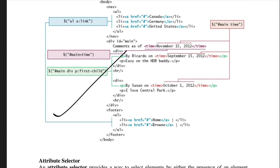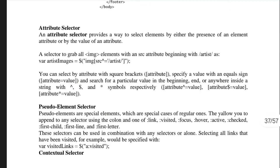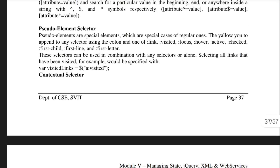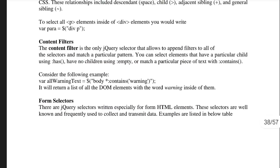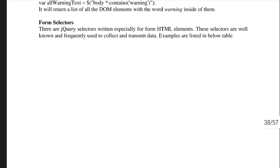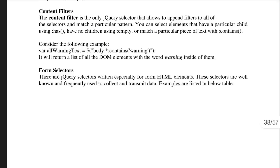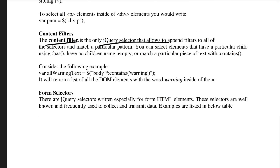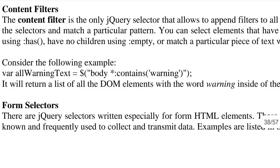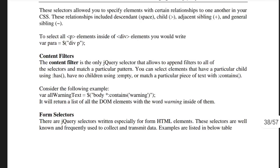If they ask about basic selectors, write the four types. If they ask about selectors in general, also include attribute selectors, pseudo element selectors, contextual selectors, content filters, and form selectors — all are straightforward. Pick the important concepts marked in bold. For example, a content filter filters content based on what you pass: body elements containing a warning message will be selected and filtered.